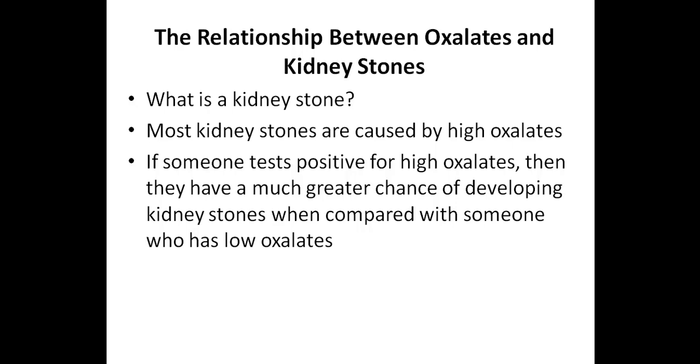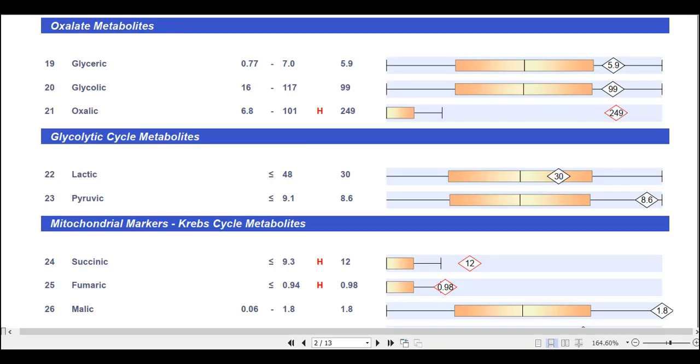And the advantage of testing is that if high oxalate levels are detected, you can take the necessary precautions to lower these oxalates. Of course, this is something you can do even if you choose not to do this type of testing. So let's go ahead and take a look at the oxalate markers on the organic acids test.